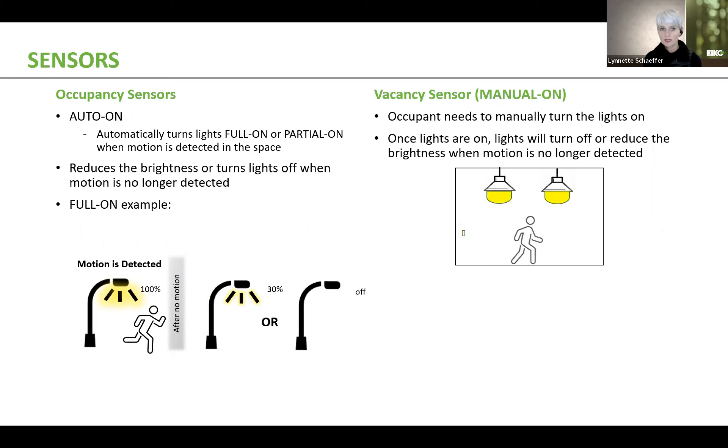they do something within the space, they leave. After a period of time, the light fixtures will eventually dim down or shut off entirely. And again, in order for those lights to turn back on, they have to physically hit the button, and then the lights will come back on. So that is how vacancy sensing works versus occupancy sensing.